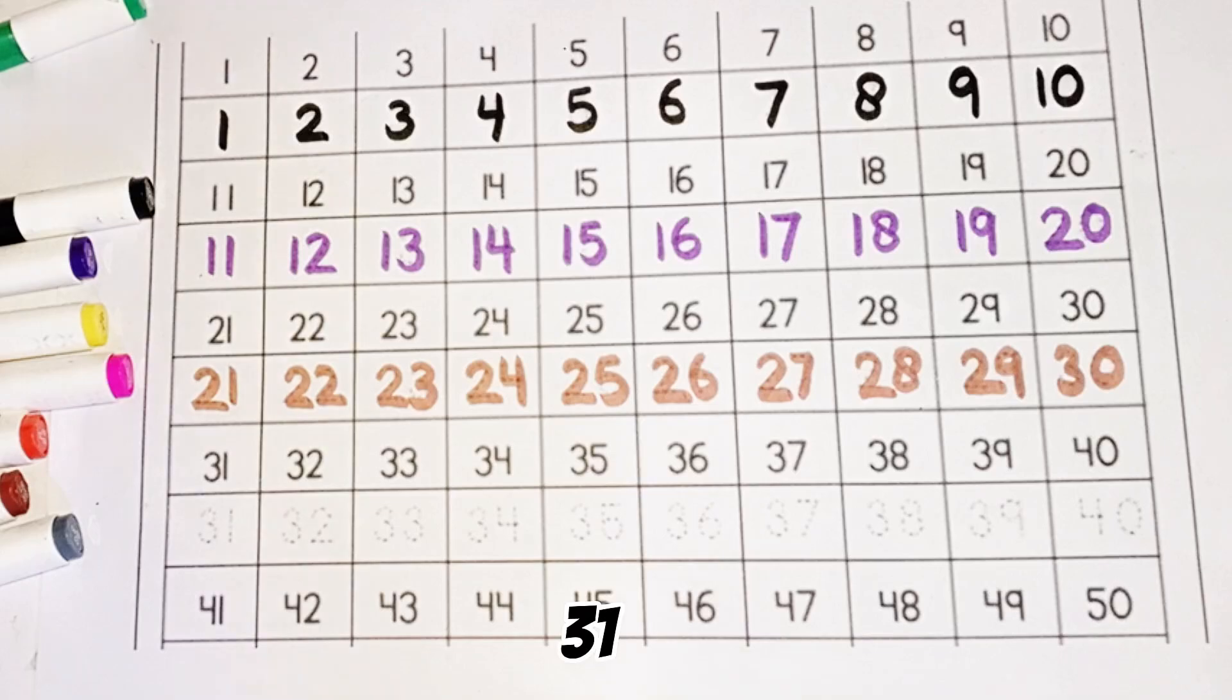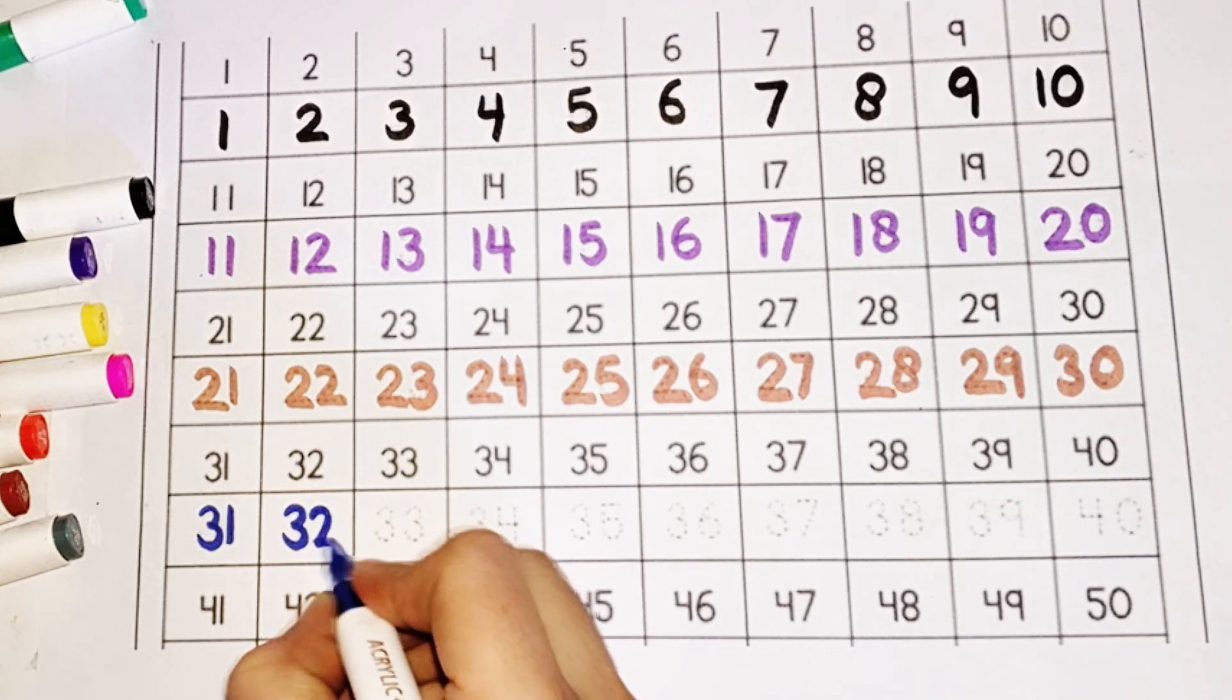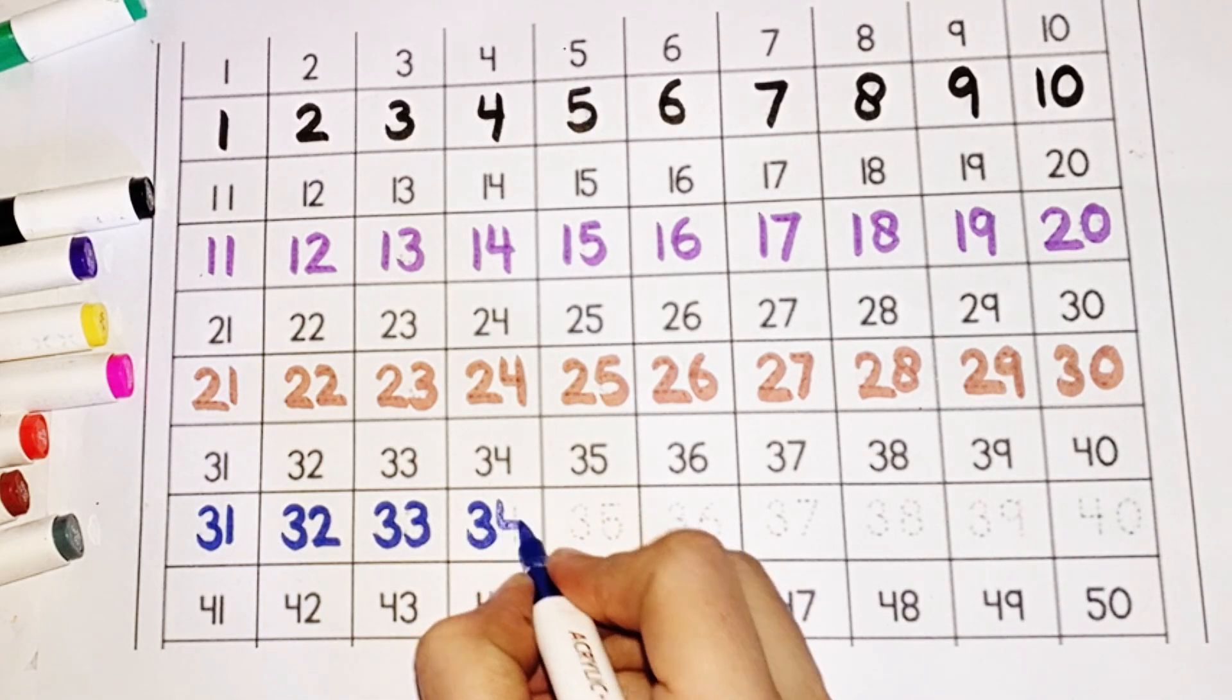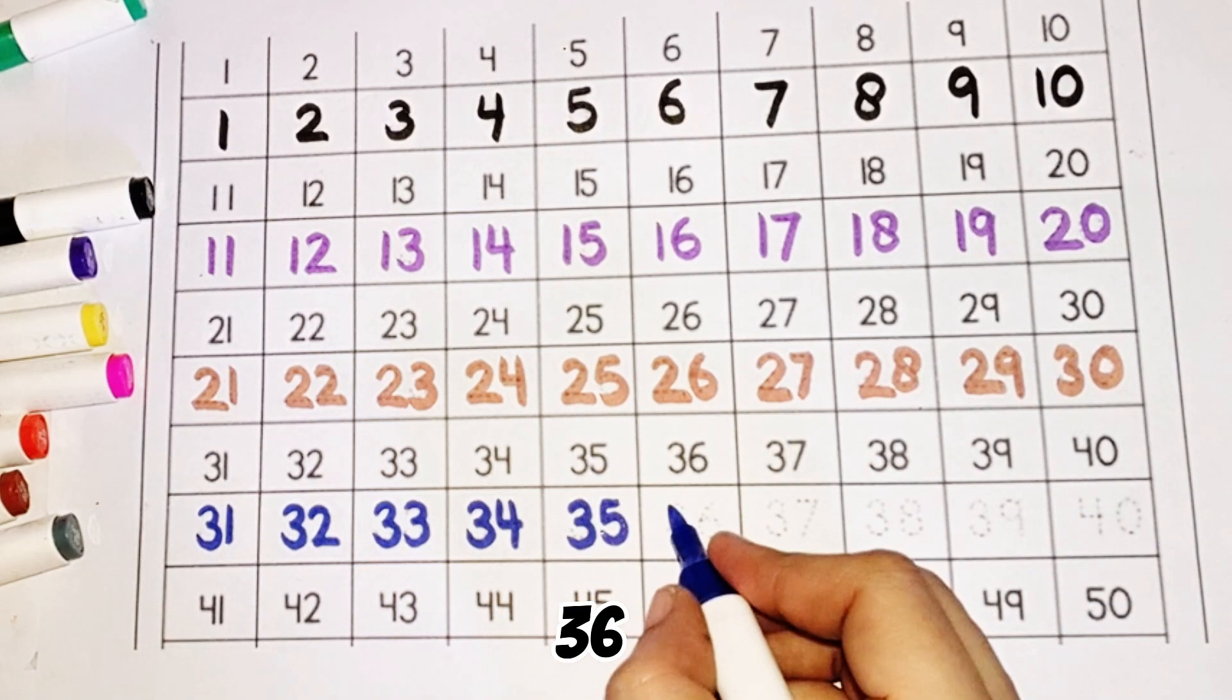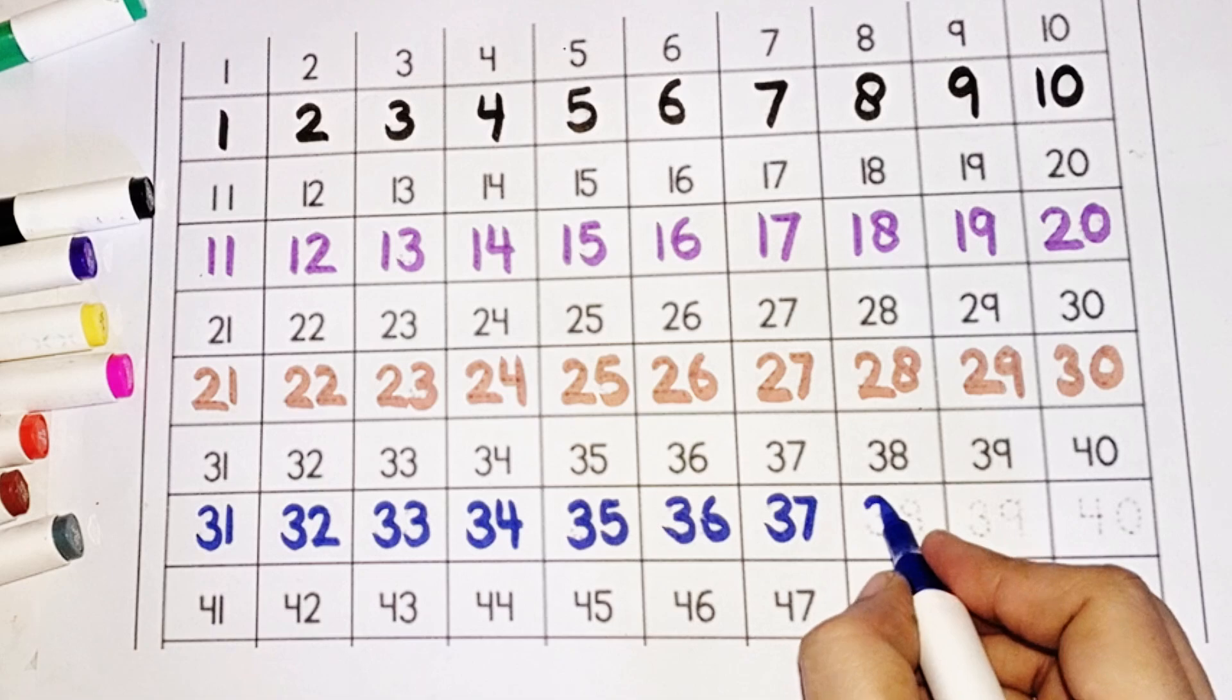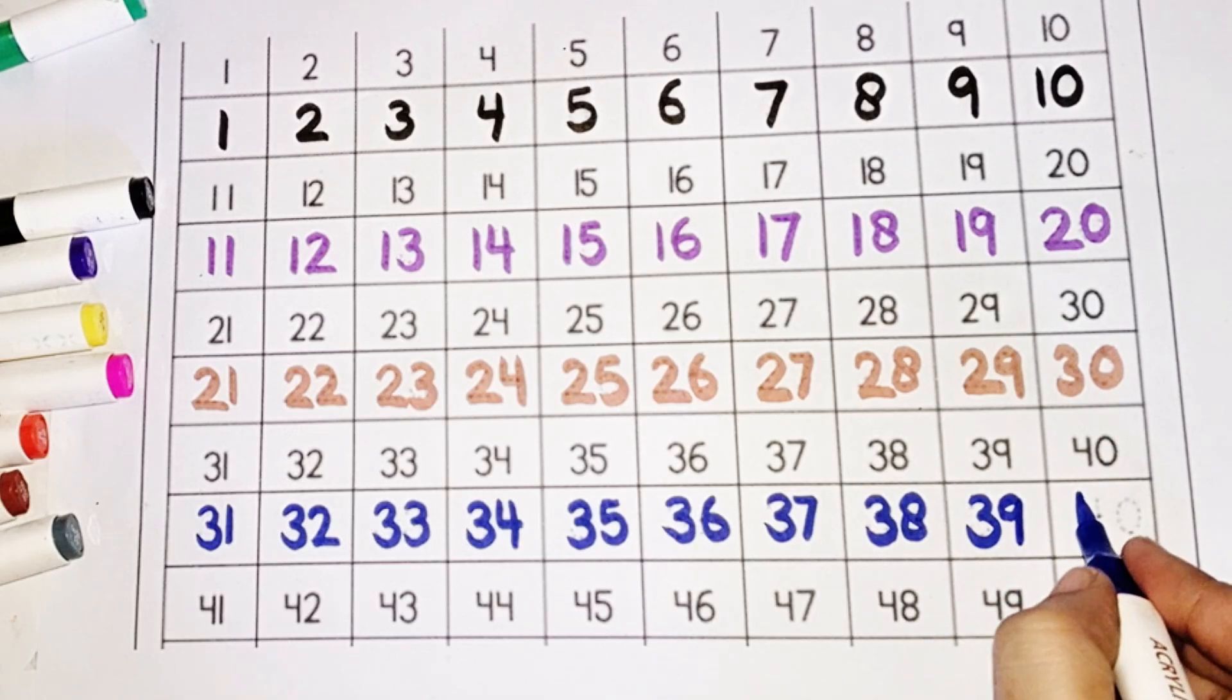Thirty-one, thirty-two, thirty-three, thirty-four, thirty-five, thirty-six, thirty-seven, thirty-eight, thirty-nine, forty.